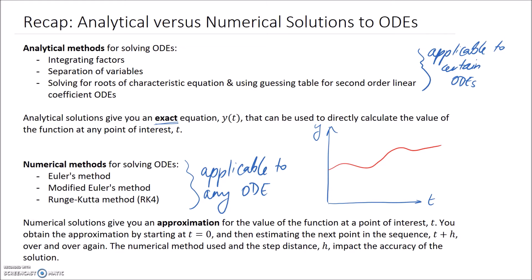Numerical solutions give us an approximation for the value of the function at any point of interest t. You obtain the approximation by starting at t equals 0 — corresponding to your initial condition — and then estimating the next point in the sequence at a future time t plus h, repeating this over and over again. One important factor in this approximation is the step distance h, which significantly impacts the accuracy of the solution. Similarly, the numerical method you select also impacts the accuracy.